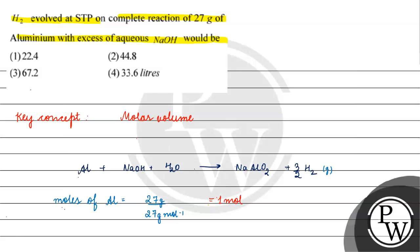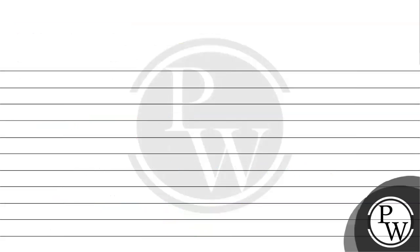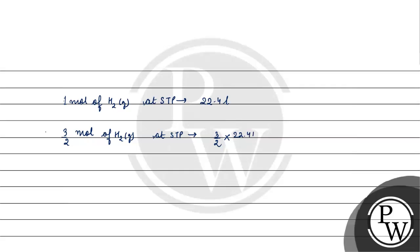Since one mole of aluminium gives three-by-two moles of hydrogen gas, we need to find its volume at STP. One mole of hydrogen gas at STP is 22.4 liters, so three-by-two moles equals 3/2 × 22.4 = 33.6 liters of hydrogen gas.